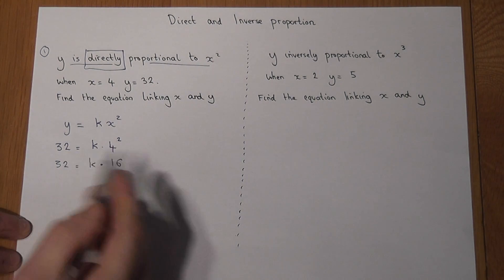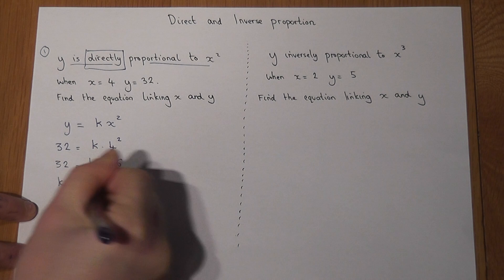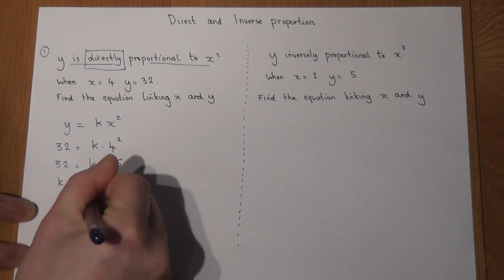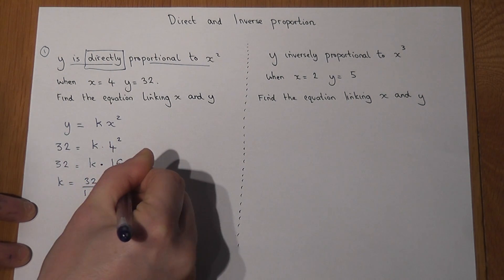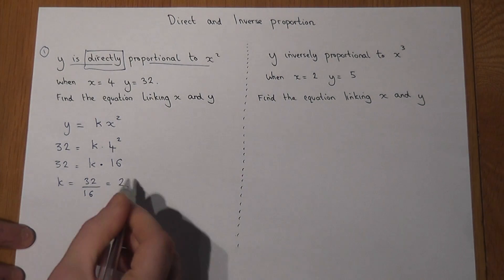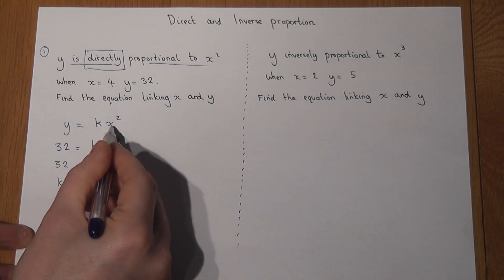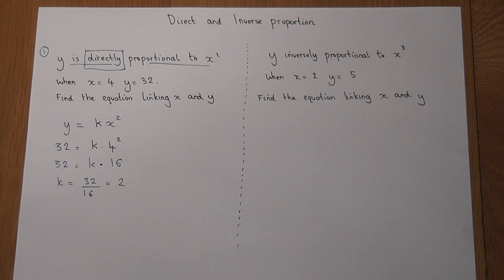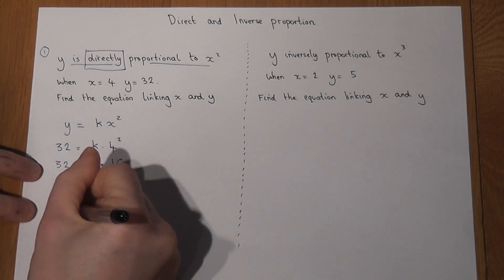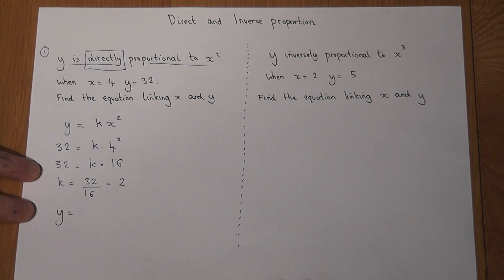So k tells us what to do to get from 16 to 32. Well, k must equal 32 divided by 16, which equals 2. So k is the number linking x squared and y, so I therefore know that y must equal, for any value of x whatsoever, 2 lots of x squared.